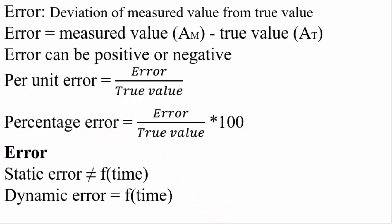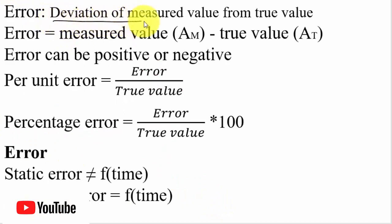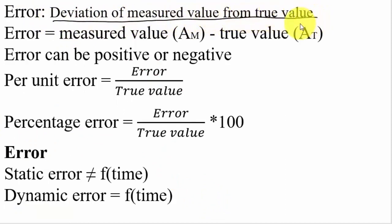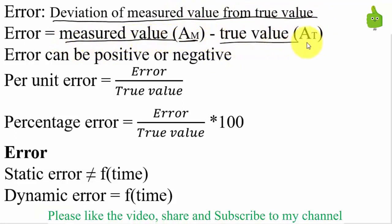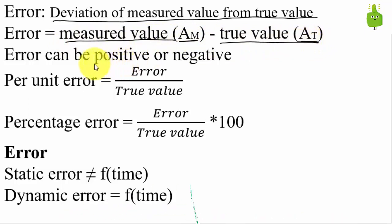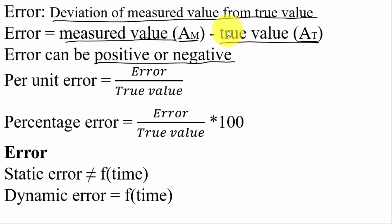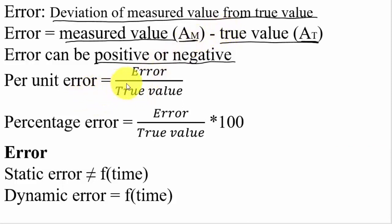What do you mean by error? Error is nothing but the deviation of measured value from the true value, or the difference of measured value (AM) from true value (AT). Error can be positive or negative. Most cases error is negative because measured value is less than true value, but in counter-type ADC, measured value is more than true value giving positive error. Per unit error is error divided by true value; percentage error is error divided by true value into 100.